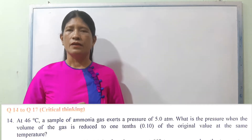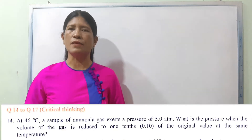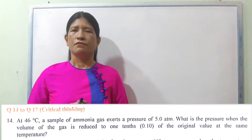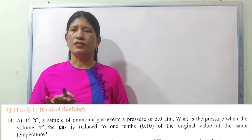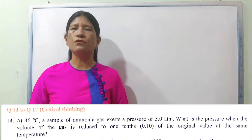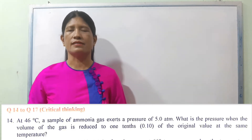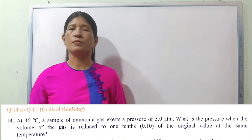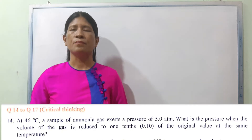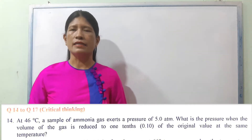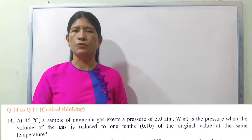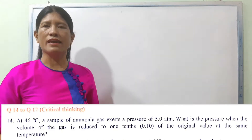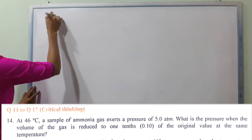Number 14: at 46 degrees Celsius, ammonia gas pressure is 5.80 ATM. In the final step, the volume of the gas is reduced to 0.1 of the original. The pressure is reduced to 5.10 when the temperature is reduced to 0.1.